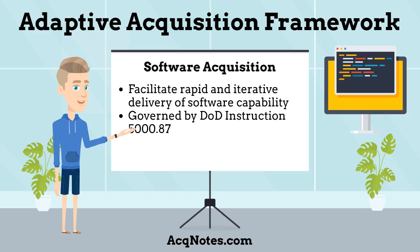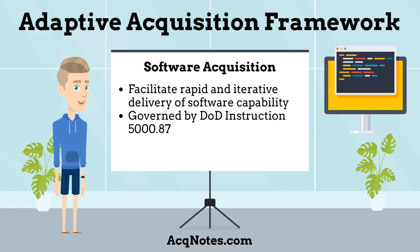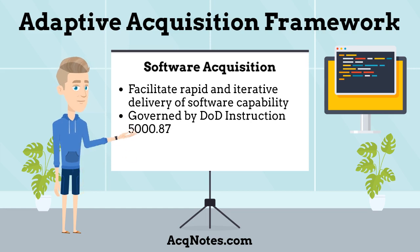The fourth Adaptive Acquisition Pathway is Software Acquisition. Software Acquisition is to facilitate rapid and iterative delivery of software capability to the user. It is governed by DOD Instruction 5000.87, Operations of the Software Acquisition Pathway.